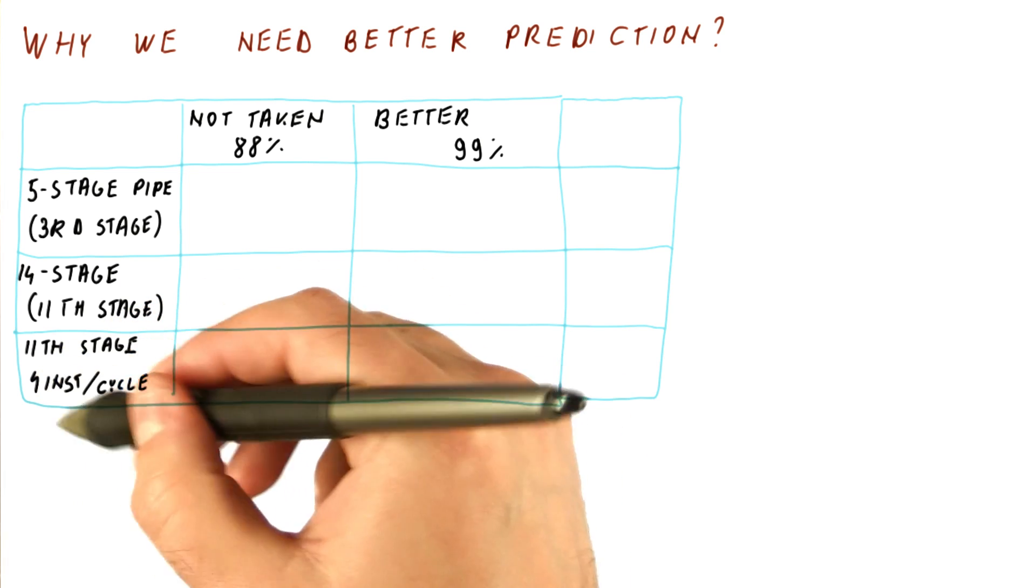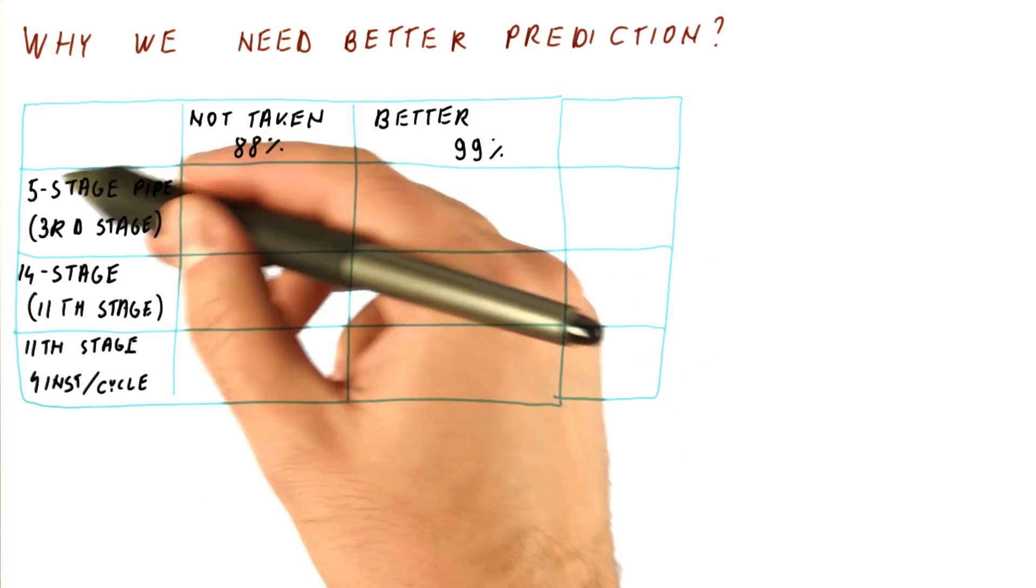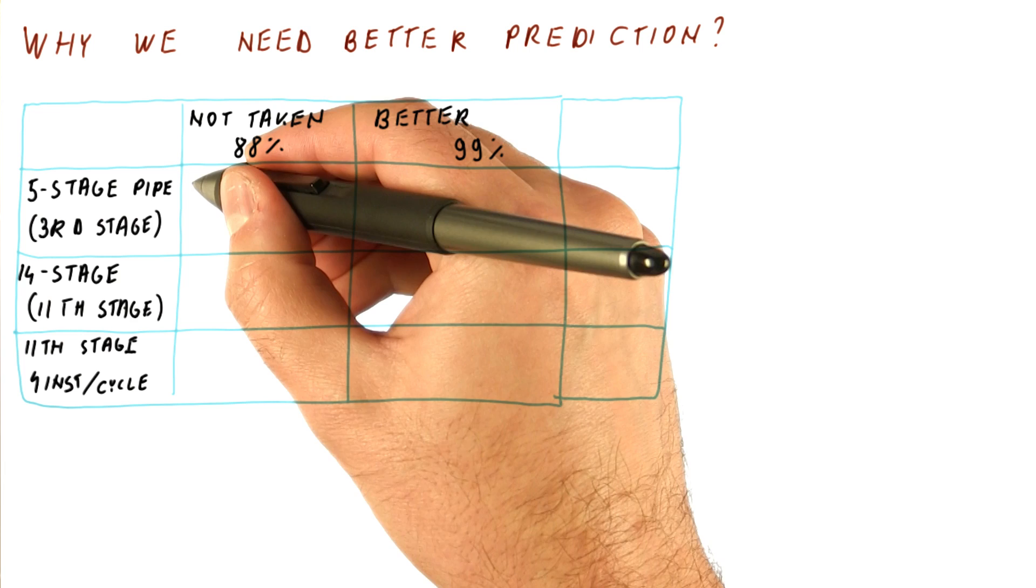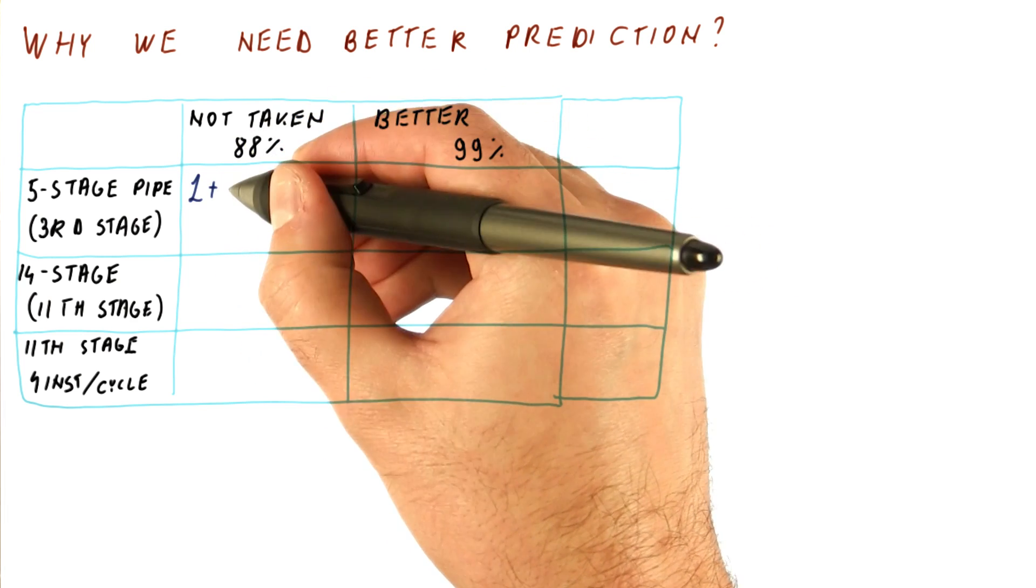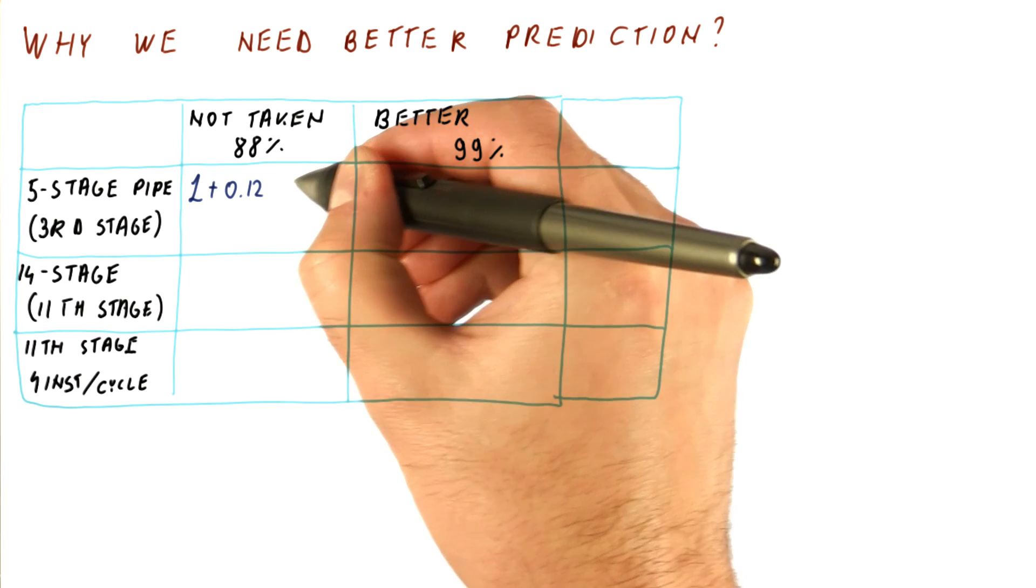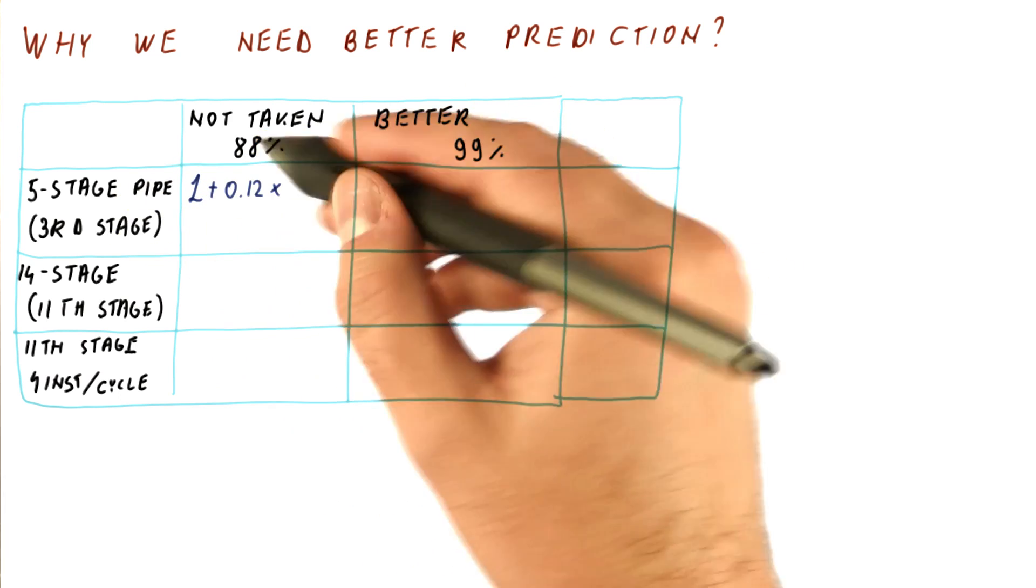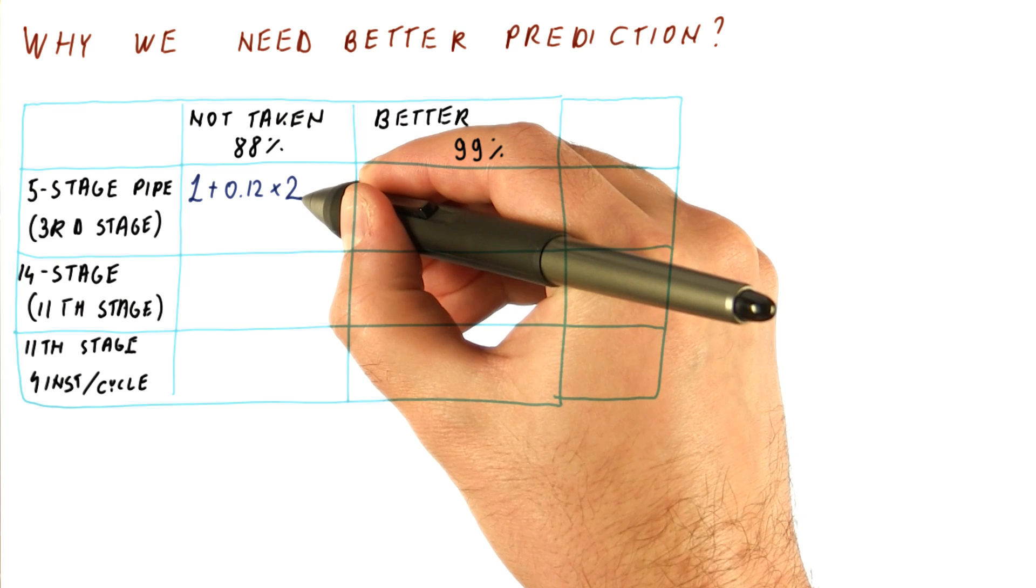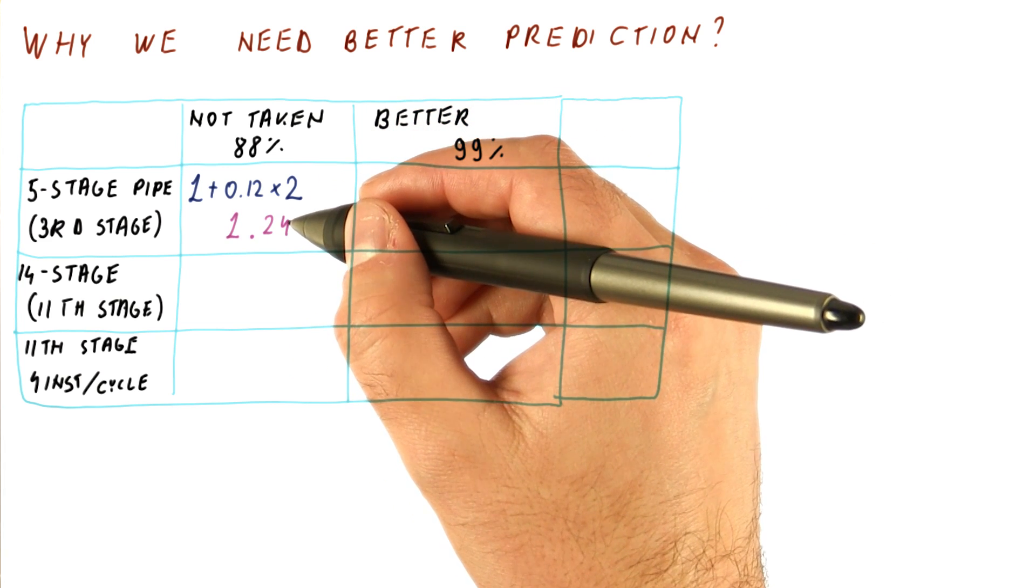This is very close to what modern processors look like. So for a not taken predictor and a 5-stage pipe, the CPI we get is 1 plus how often we mispredict, which is 12% of all instructions, times the penalty of a misprediction, which is 2 cycles, which gives us a total CPI of 1.24.